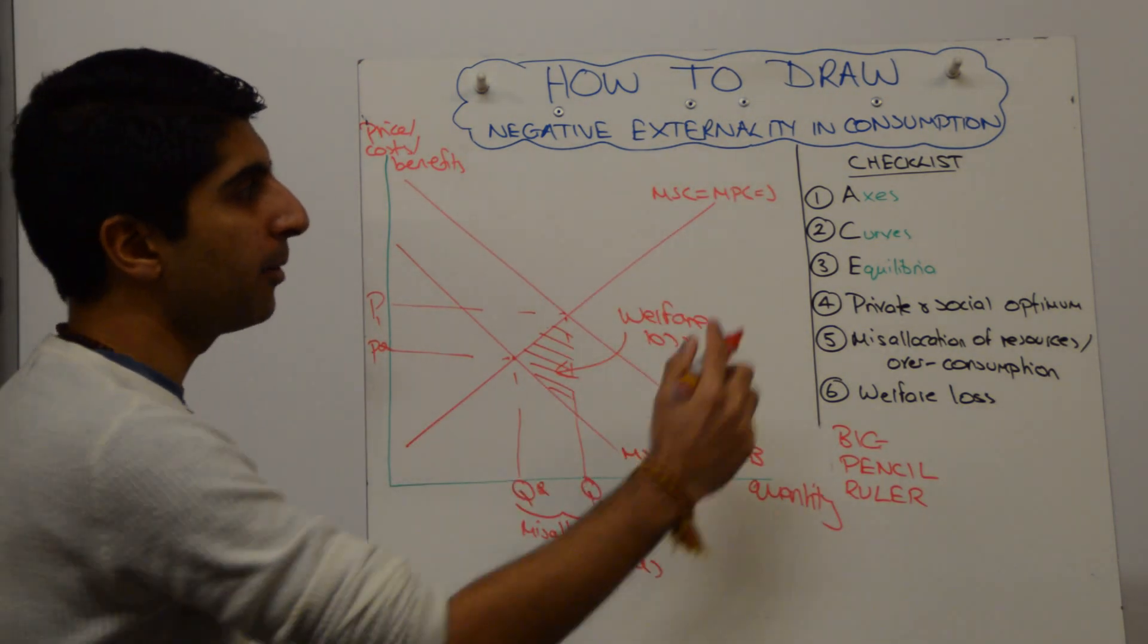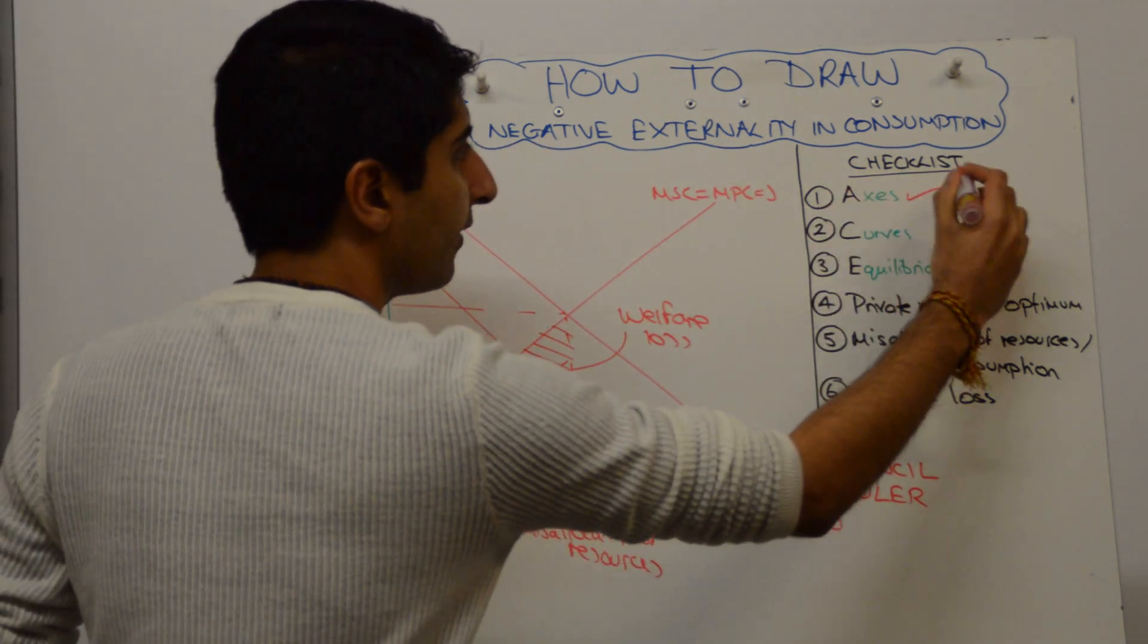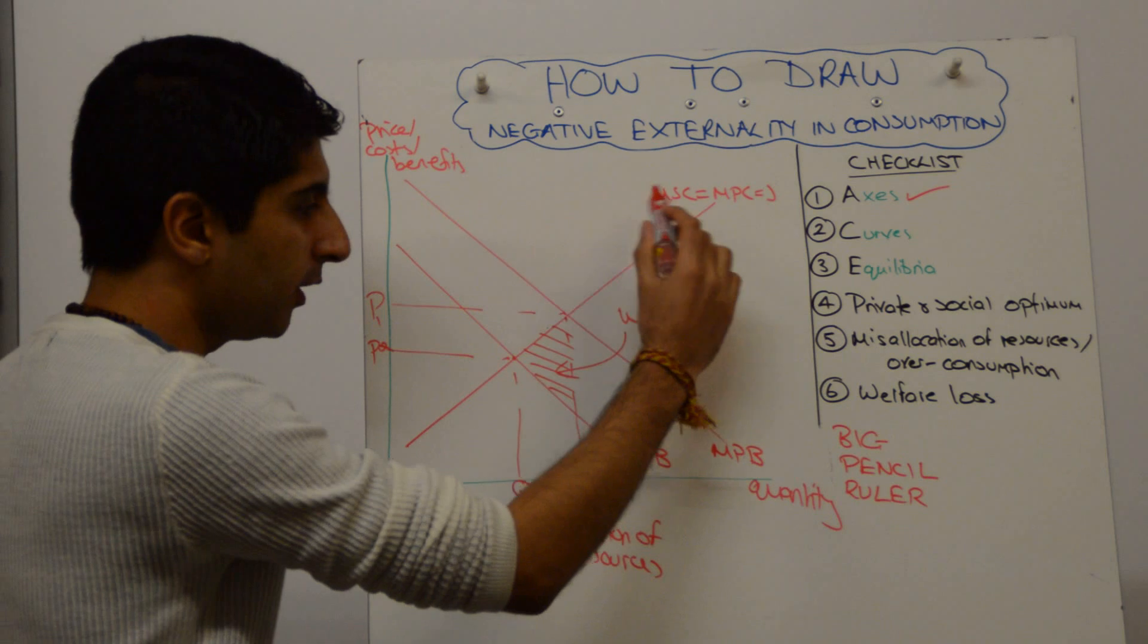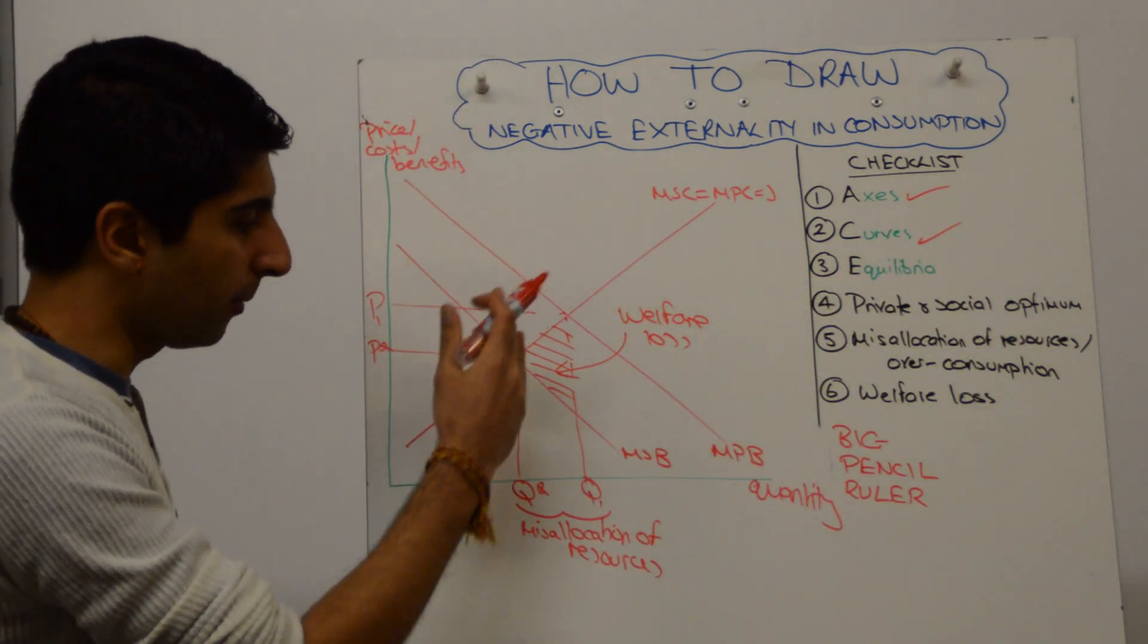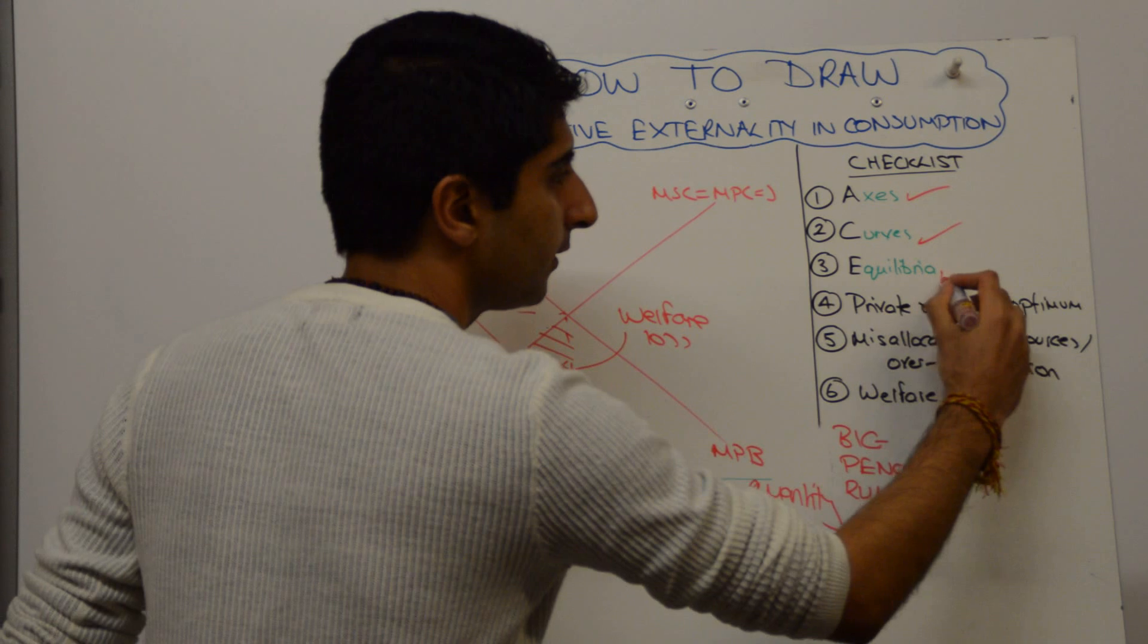Remember, we draw ACE diagrams. We label our axis. Have we done that here? Yes, we have. We label our curves fully. Have we done that here? Yeah. Are our equilibrium labelled? Yes, we have. We've got P1, Q1, P star, Q star. Everything is nicely labelled there.